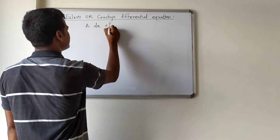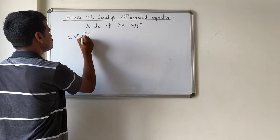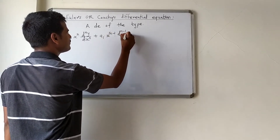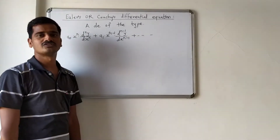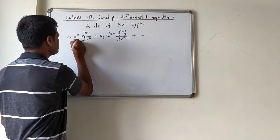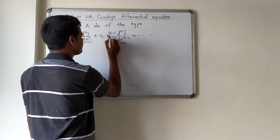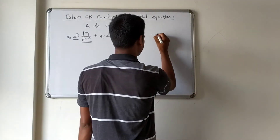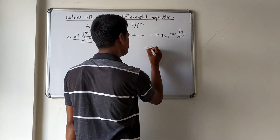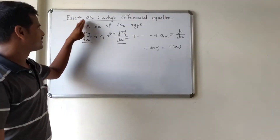The differential equation is of the type: a₀ xⁿ (dⁿy/dxⁿ) + a₁ x^(n−1) (d^(n−1)y/dx^(n−1)) + … + a_(n−1) x (dy/dx) + aₙy = f(x). Here xⁿ is attached with the nth derivative, x^(n−1) with the (n−1)th derivative, and so on. This is the standard form of Euler's or Cauchy's differential equation.